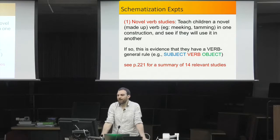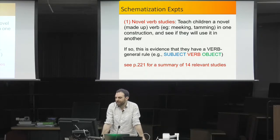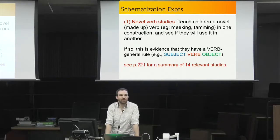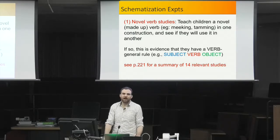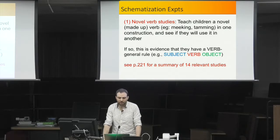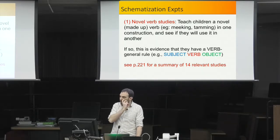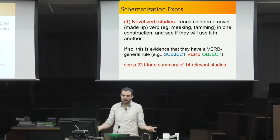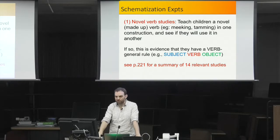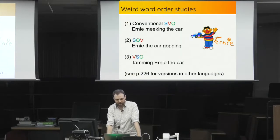In novel verb studies, children are taught a novel verb like 'meeking' in one construction and then tested on whether they'll use it in a construction they haven't heard it in. Generally, up to around age three, children will use nouns in novel constructions but not verbs — if taught a verb only in a context like 'this is called meeking,' they typically can't use it in a subject-verb-object transitive construction until around age three.